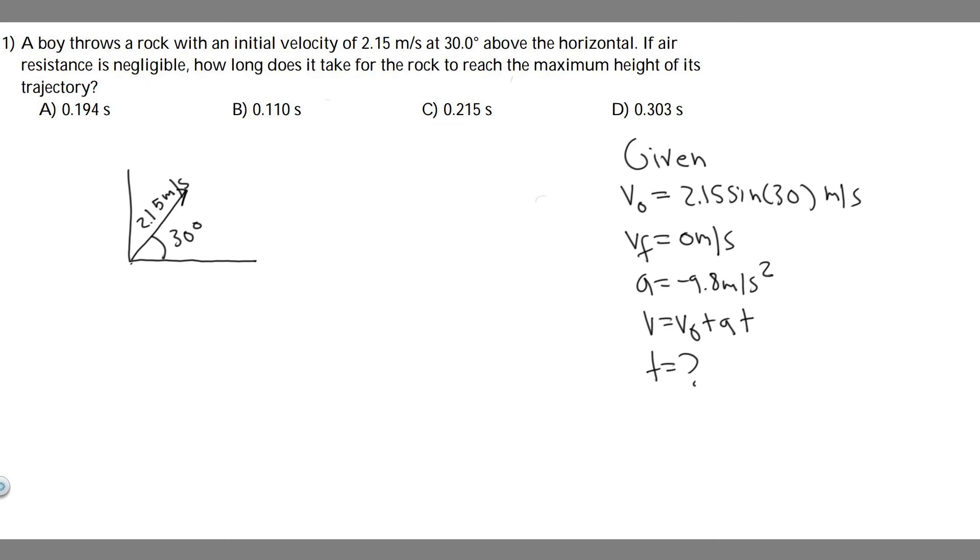If we have v final, we have a, and we're solving for t, we can use this equation. We need to find v₀, the initial velocity in the y direction. They give us the vector: 2.15 meters per second at 30 degrees. To find the y component, do 2.15 times the sine of 30. So 2.15 times sin(30) equals v₀.